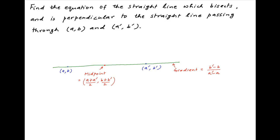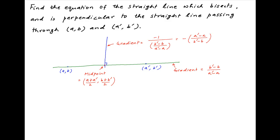Now, let's draw a line that is perpendicular to the given line and passes through the midpoint of these two given points. The gradient of this line is equal to -1 divided by the gradient of the line joining the given points, which is (b' - b) / (a' - a). Therefore, the gradient of the perpendicular line is equal to -(a' - a) / (b' - b).